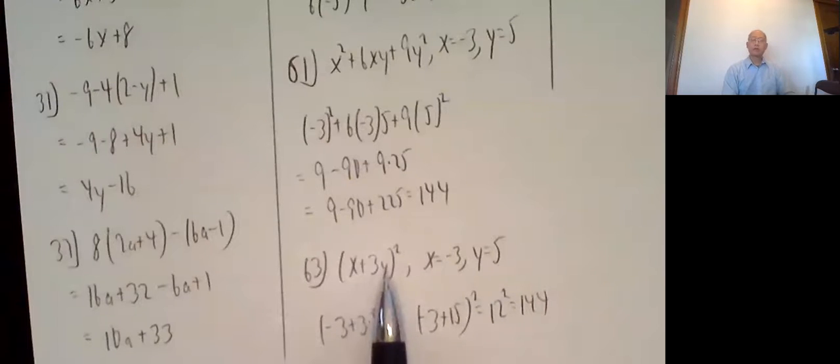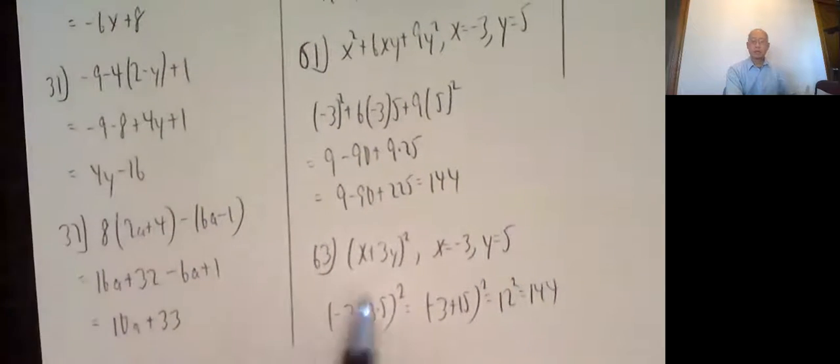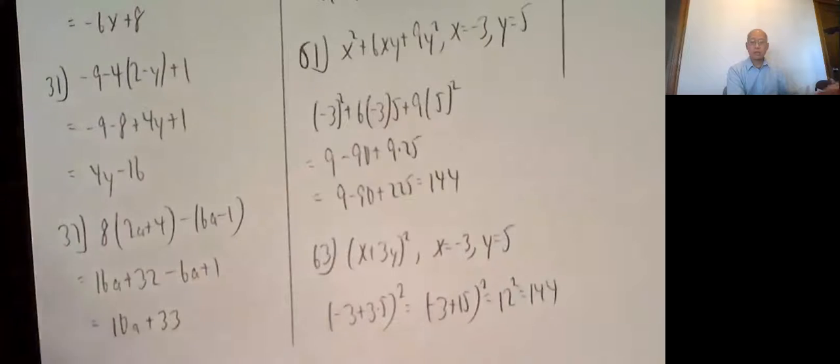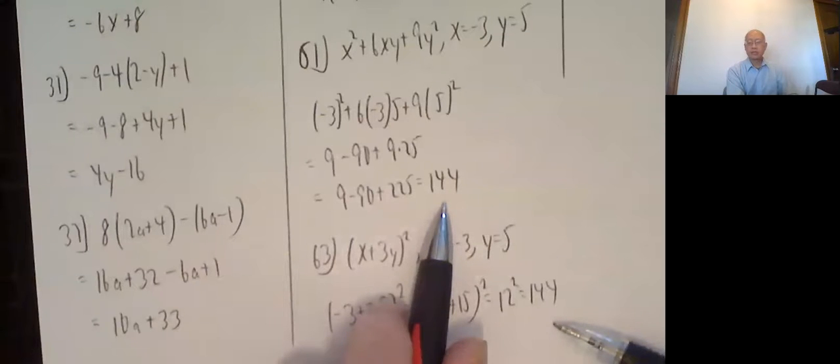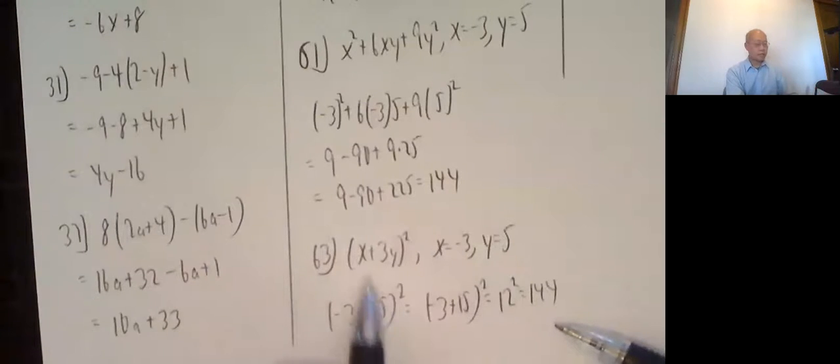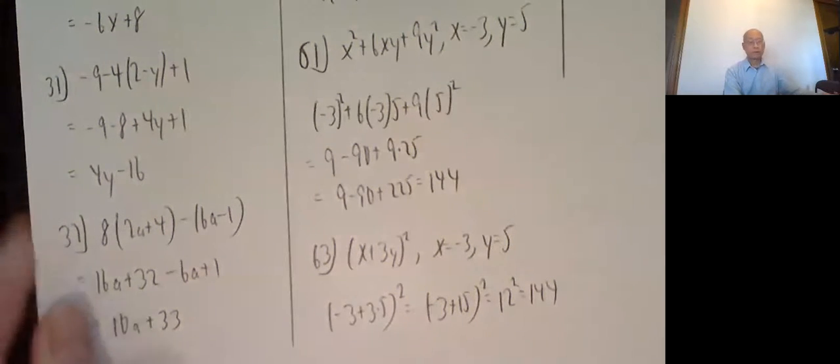63, x plus 3y squared. Plug in the same two numbers, negative 3 and 5. So negative 3 plus 3 times 5 squared. That's negative 3 plus 15 squared, which is 12 squared. 12 times 12 is 144. And notice you get the same answer here and here. This is a side note, which would lead you to indicate that this and this are the same expression. They actually are, and we'll learn that later.